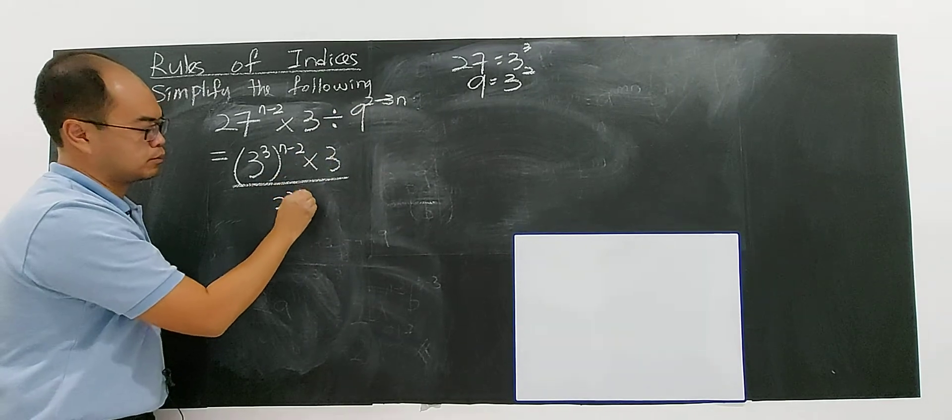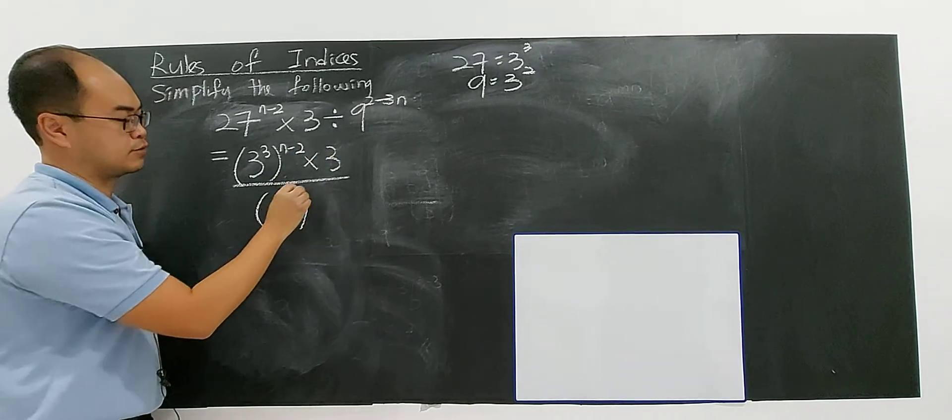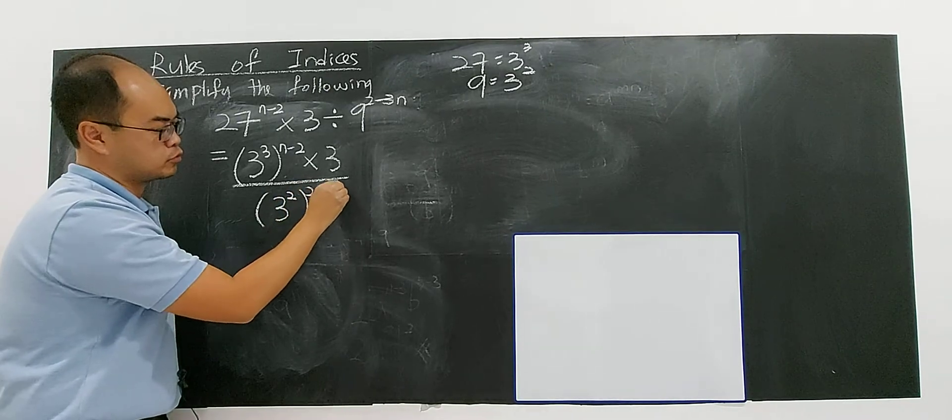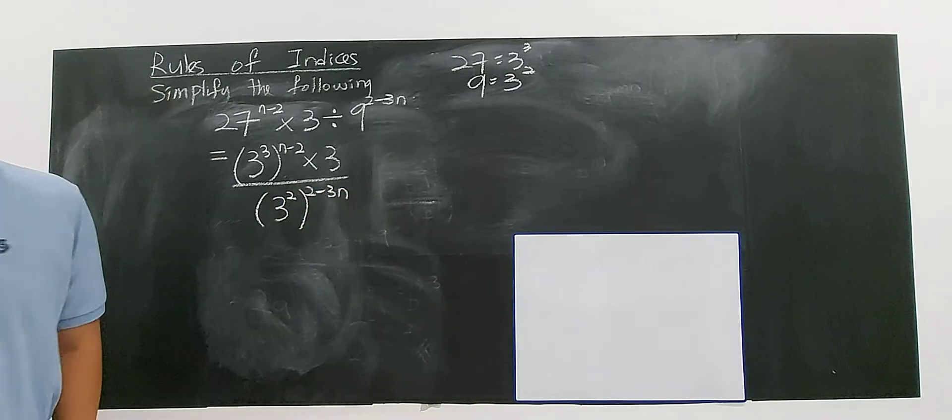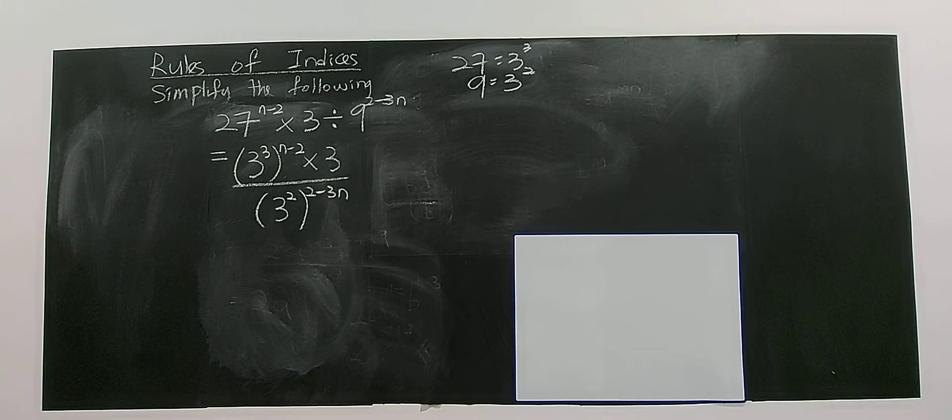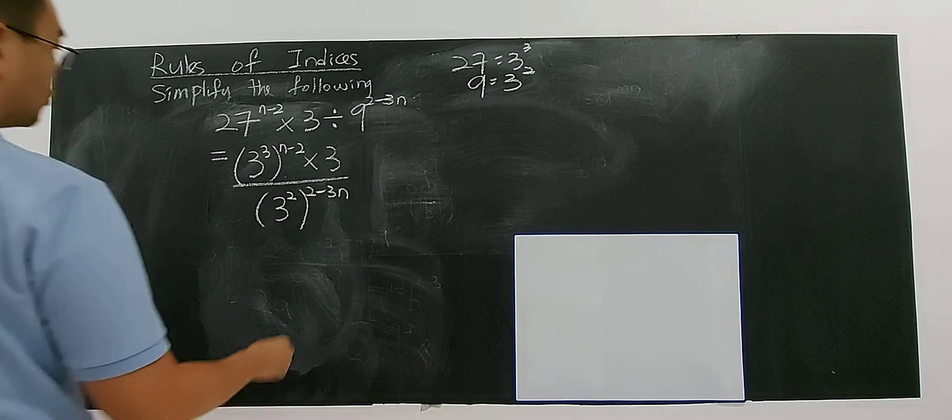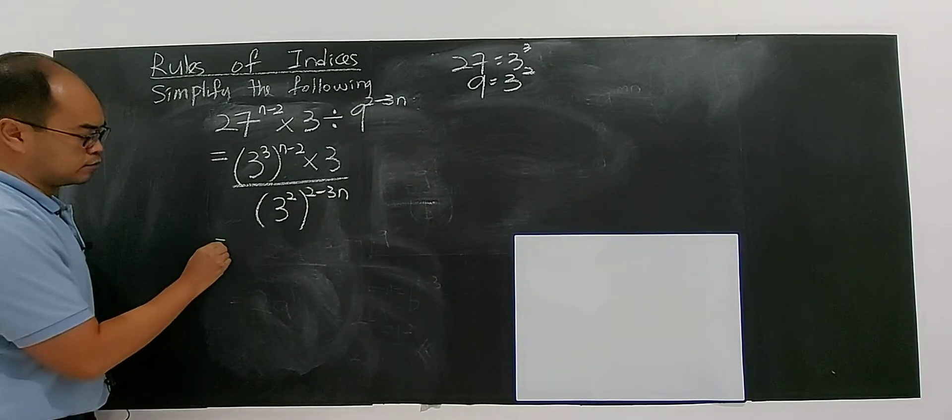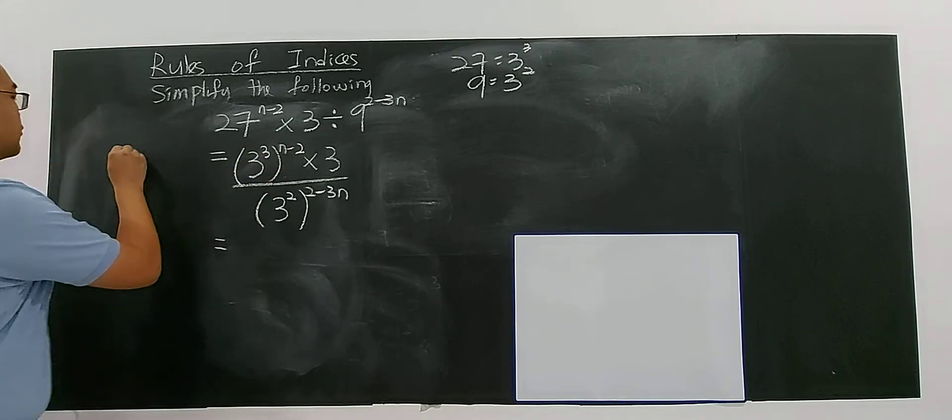Multiply with 3 divided - usually I ask students to do this way. 9 is 3 to the power of 2, put bracket, 2 minus 3n. This will be your first step.